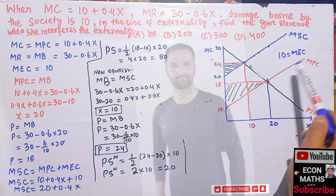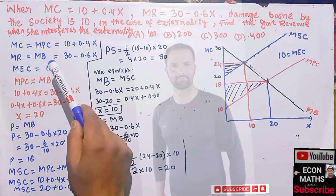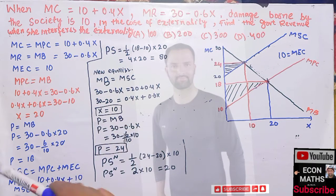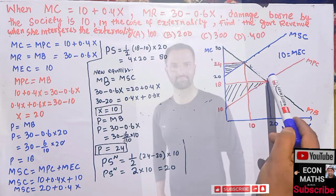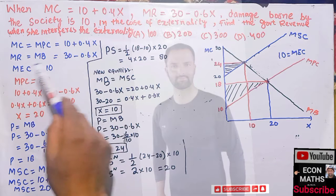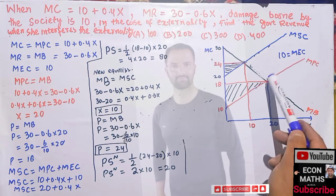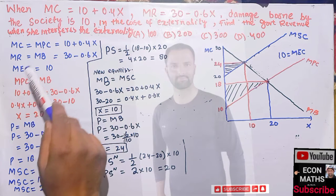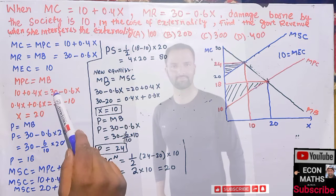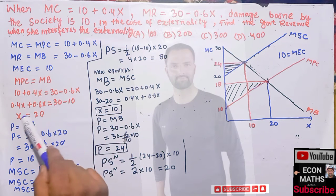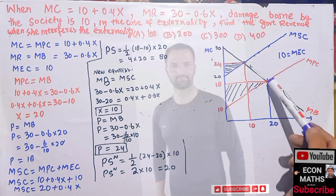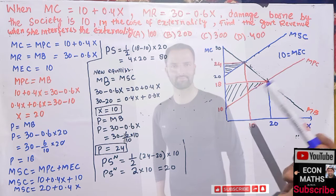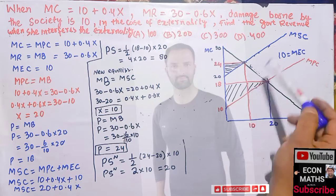Our marginal external cost, that is the damage borne by society, is 10. Initially, our equilibrium would be at the point where we don't consider the MEC — where marginal private cost equals marginal benefit. Setting 10 plus 0.4x equal to 30 minus 0.6x and solving, we get x equal to 20. This is the output produced when we do not take into account the marginal external cost.